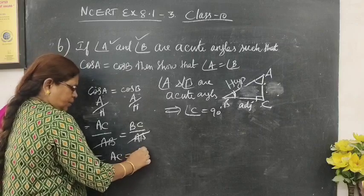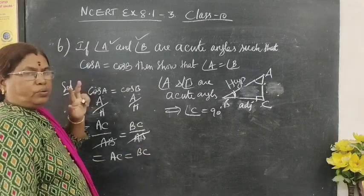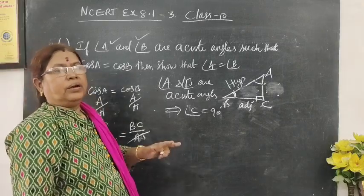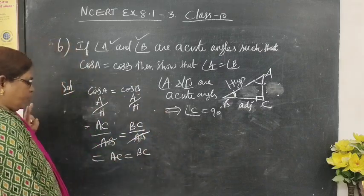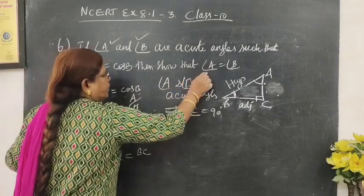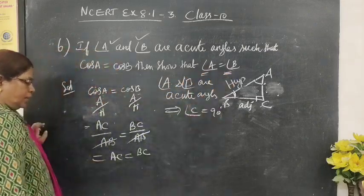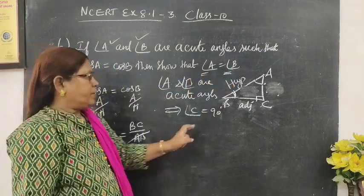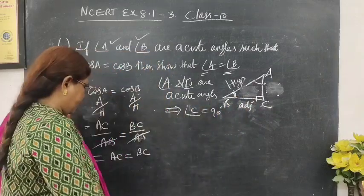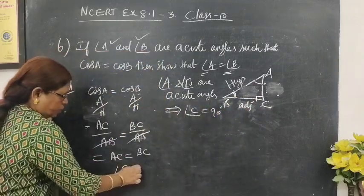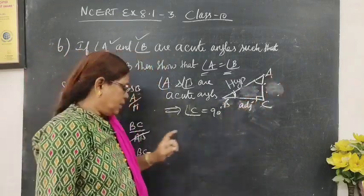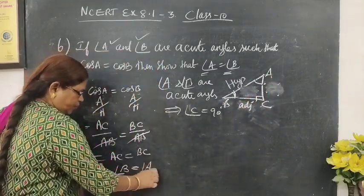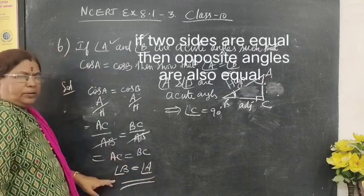So AC equals BC. When two sides are equal, then opposite angles are also equal by property. So this implies angle A equals angle B. For AC, the opposite angle is angle B. For BC, the opposite angle is angle A. Hence the result. Thank you.